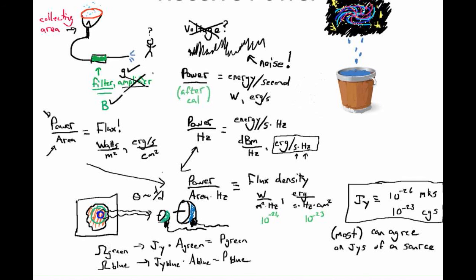The first thing you'll notice is that because there's a larger patch on the sky that the green telescope sees, the number of Janskys for the green patch is not going to equal the number for the blue patch — there will just be more photons per area per hertz if you consider a larger emitting patch. So the two telescopes, blue and green, will not be able to agree on the number of Janskys of this source.